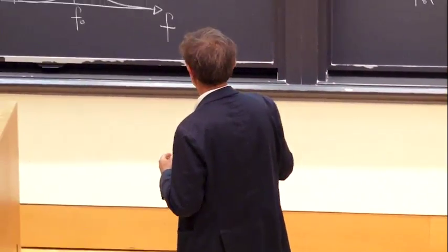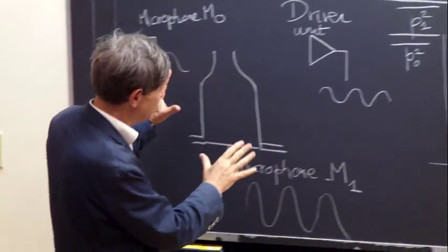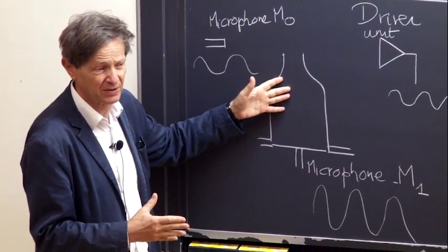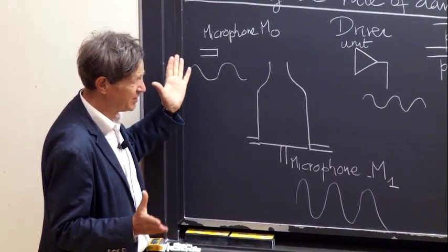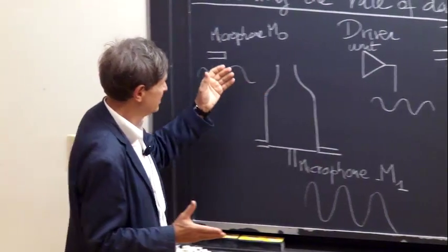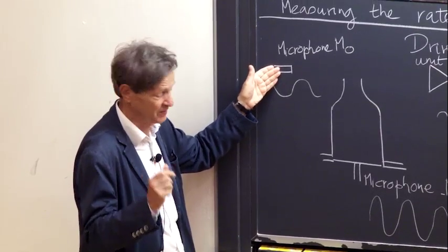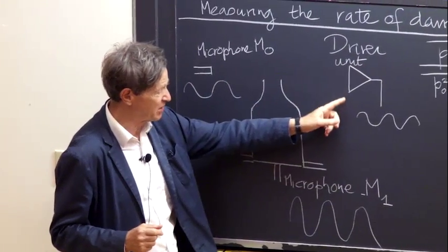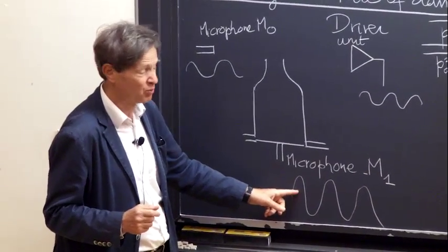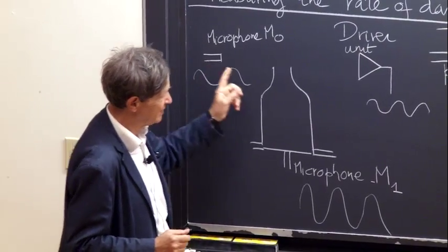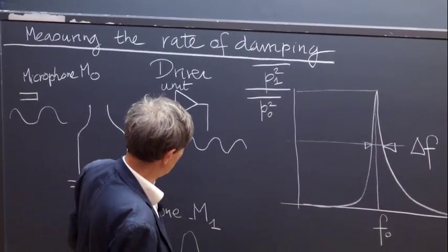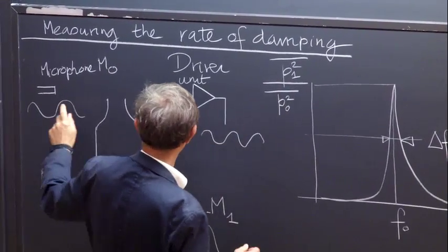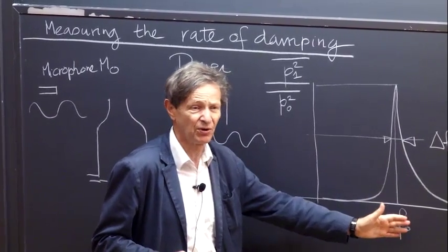There are a few topics I thought it would be useful to describe. One of them is how one measures the rate of damping. When you have a simple system like this Helmholtz resonator from yesterday and you want to know what is the damping, one very simple method is as follows. You put a loudspeaker here, you take a microphone M0 as a reference, and then you put a microphone at the bottom of this device. You drive the speaker at a given frequency and see what happens at microphones M1 and M0. You take the root mean square of the pressure at M1, divide that by the root mean square of the pressure at M0, and plot the response curve as a function of frequency.